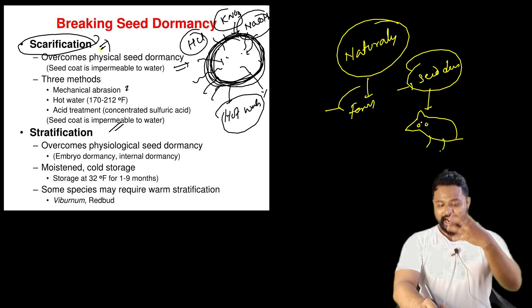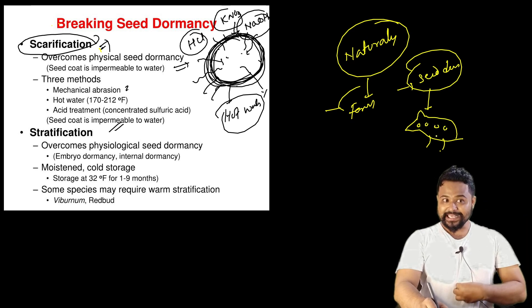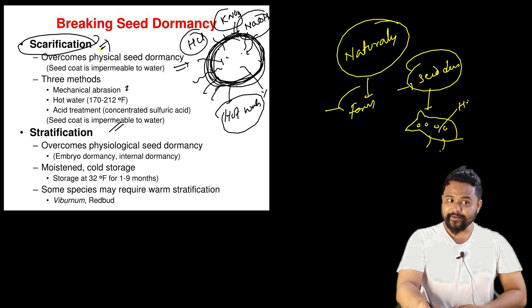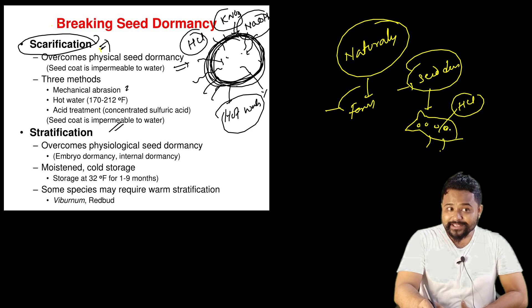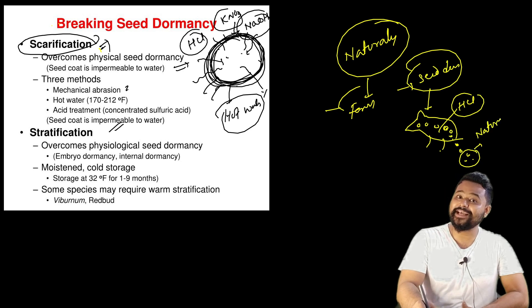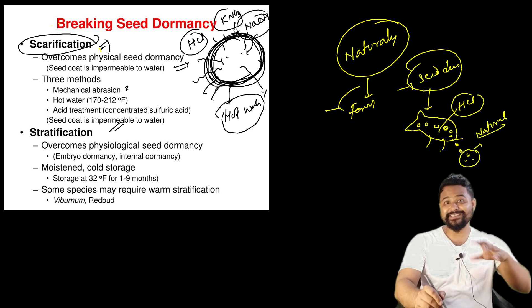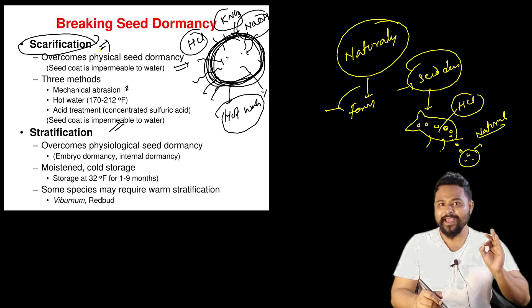When animals eat seeds - the gutti - the intestinal acids, specifically the hydrochloric acid (HCl) in the stomach, act on the seed coat. This is already natural scarification. The acid breaks down the hard seed coat naturally, allowing germination later.